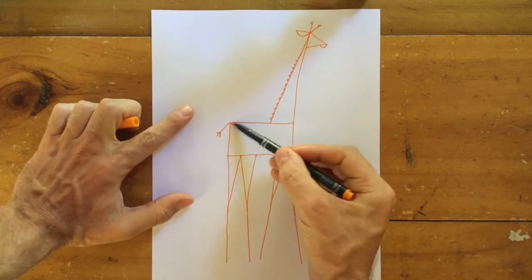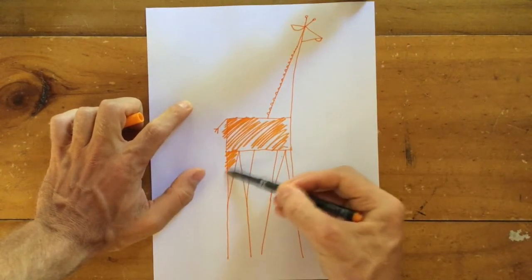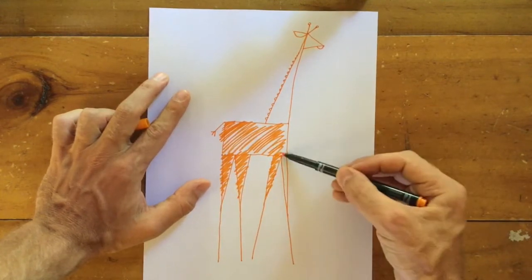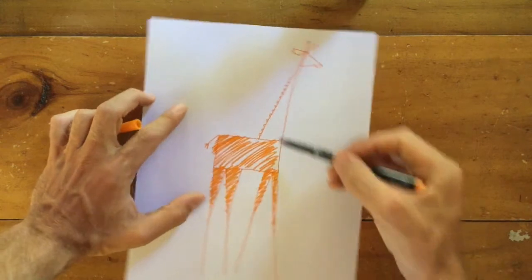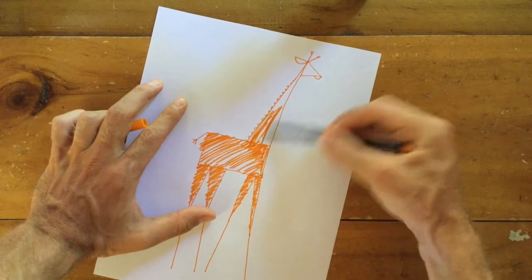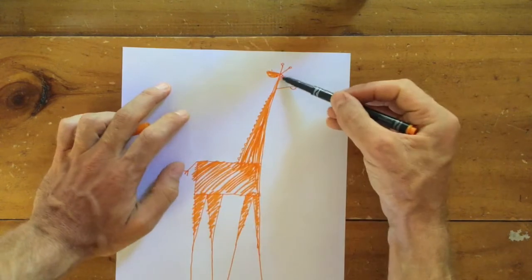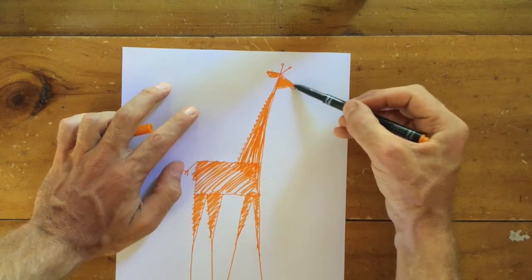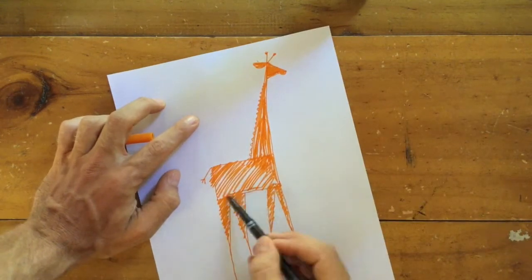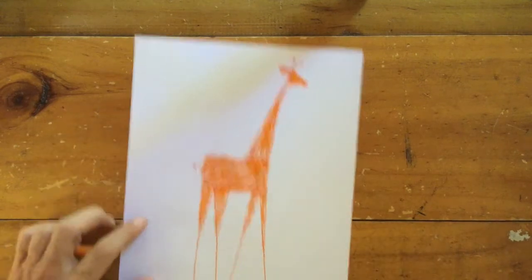So let's colour that one in. I'm doing this really rough and fast, hopefully you will do it much more carefully. But you get the idea, like this. Let's do it with a bit more care here on the head. That's it.